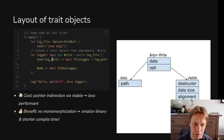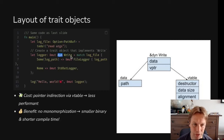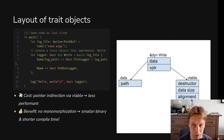So there's a cost to this. Every time you call a method, instead of just knowing where the method is in your executable and calling it directly, you have to go look at the vtable pointer, find what memory it's pointing at, find the vtable, find the method in the vtable, and then call it. So it's a little bit slower. But there are benefits: there's no monomorphization, so there's only one copy of the log function created, making your binary smaller and compile times faster.